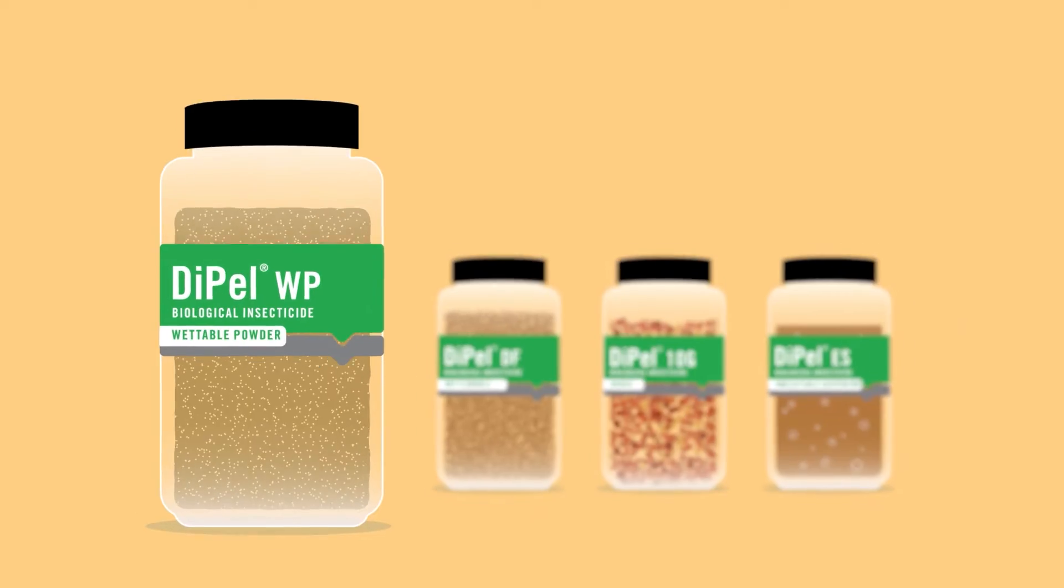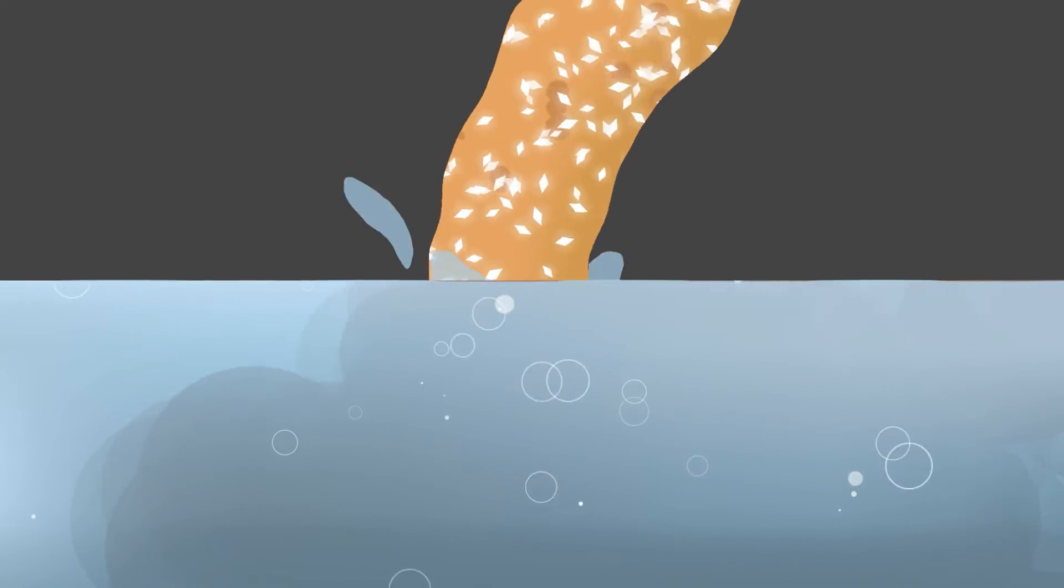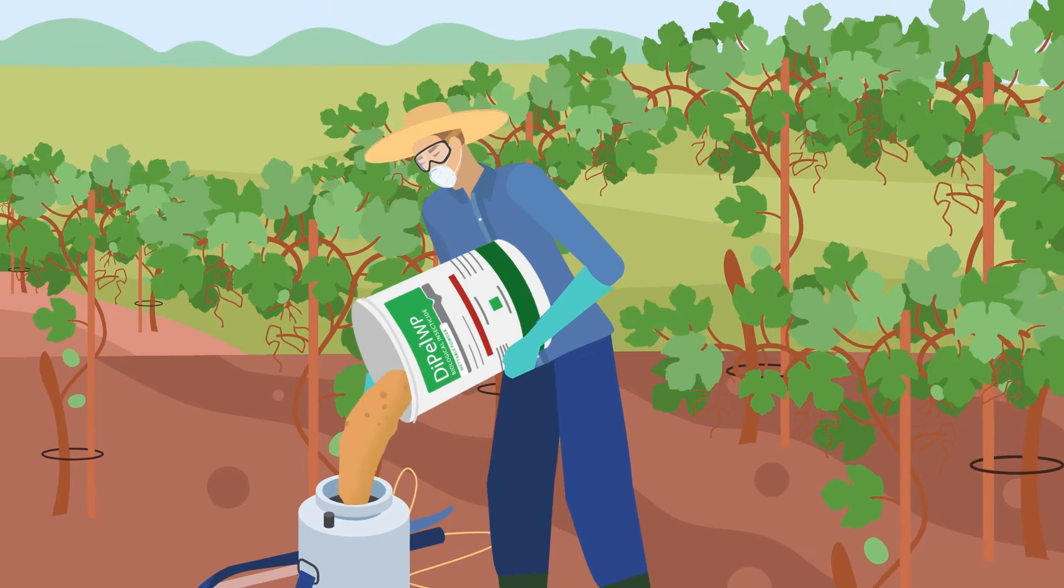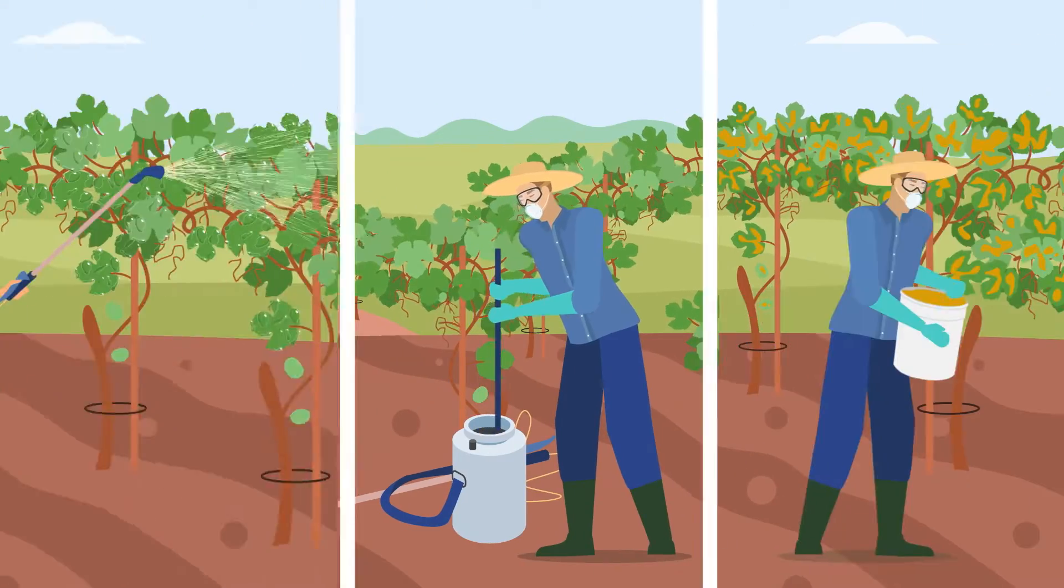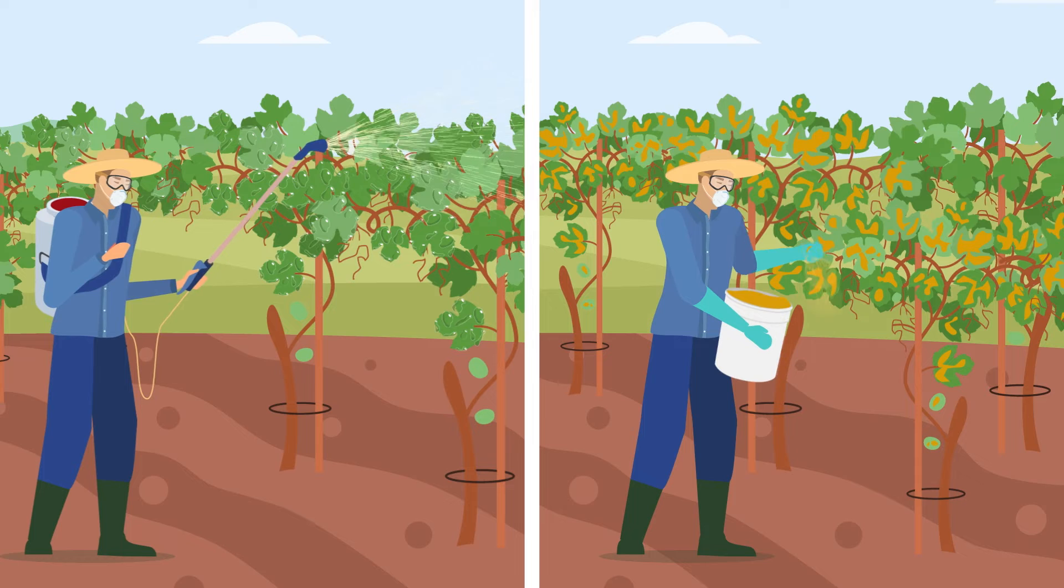Our wettable powder is a basic formulation that can be either diluted in water or mixed with sulfur as a dry application to treat both disease and insects on grapes. It protects the vine before fruit has even grown.